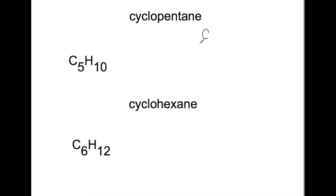Cyclopentane has five carbons in a pentagon shape, again with two hydrogens attached to each carbon.